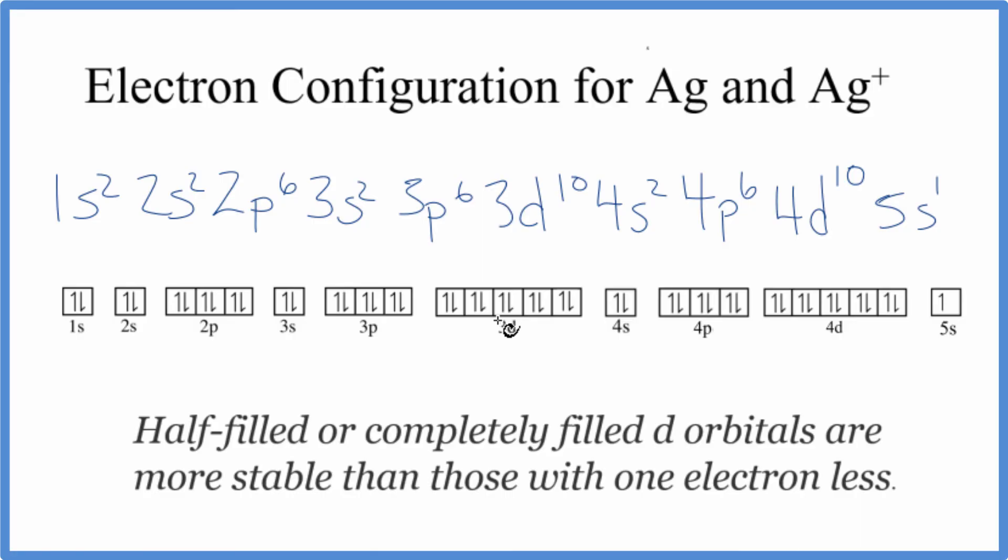This is the correct electron configuration for Ag, for silver. We needed to understand that this 4d, if we had this full or just one in each one of these little sub-orbitals here, that would be much more stable.